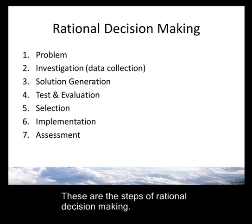Now let's shift gears and talk about the decision process. You've probably gone through some kind of decision process — buying a car, deciding on a topic for a term paper — though you may not have thought of it in these specific steps. The steps of the rational decision process are: one, Problem — identifying what you're trying to solve; two, Investigation — data collection, finding sources of data or experience to thoroughly investigate the problem; three, Solution Generation — determine what solutions are possible based on your knowledge gained from the data; four, Test and Evaluation — maybe do a pilot study to see if the solution will actually work; if not, keep looking for a viable solution.